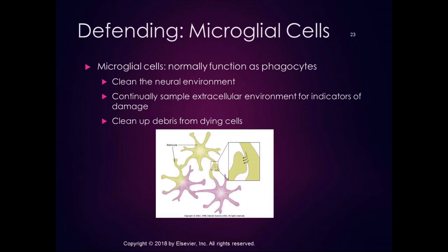Microglial cells normally function as phagocytes — nervous system phagocytes cleaning up the neural environment. They are continually sampling the extracellular environment for indicators of damage and clean up debris from dying cells. They are part of the defense against the cascade of cell death that happens when there is assault and damage to the nervous system.